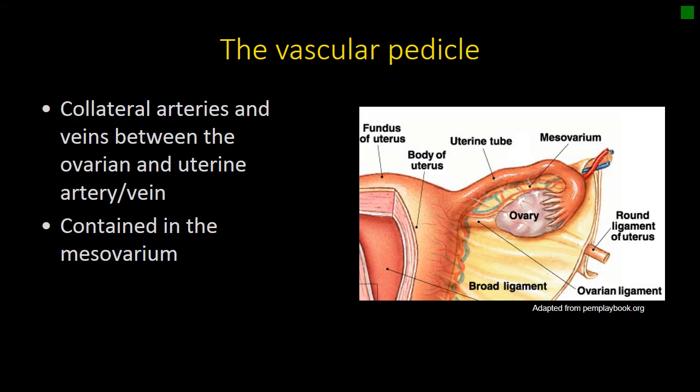When we talk about the vascular pedicle, it is made up of collateral vessels that allow for flow between the ovarian artery and vein and the uterine artery and vein. That's why we describe the ovary as having a dual blood supply. The tube is closely associated with the mesovarium and the ovarian vessels, as is the ovarian ligament, which attaches the ovary to the uterus. It is this structure that twists and becomes edematous in torsion.